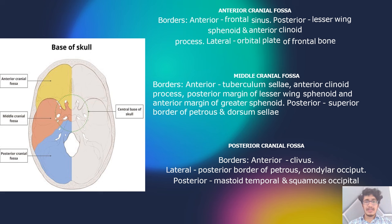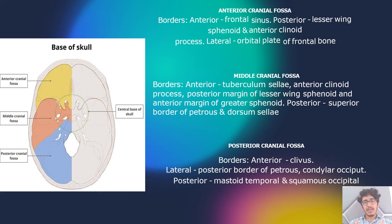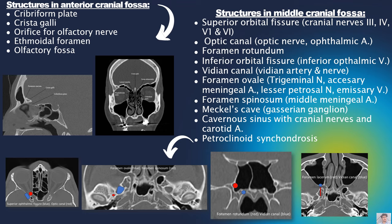The skull base is divided into anterior, middle, and posterior cranial fossae. This is an arbitrary division, not a rigid one. The anterior skull base is bounded anteriorly by the frontal bone and posteriorly by the lesser wing of the sphenoid. The middle cranial fossa is largely formed by the sphenoid bone, bounded anteriorly by the tuberculum sellae and anterior clinoid process, and posteriorly by the petrous bone and dorsum sellae. The posterior cranial fossa is bounded anteriorly by the clivus and posteriorly by the mastoid part of the temporal bone and squamous occipital bone.